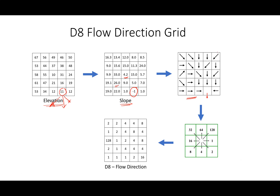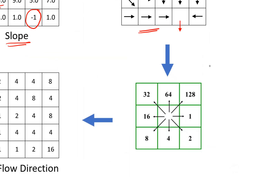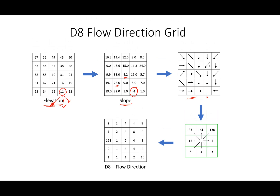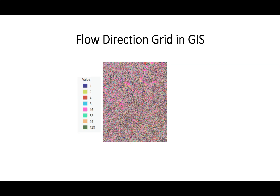Based on the slope values, I have given arrows to all cells except the outlet, which I mark in red. As humans we can see these arrows, but the computer cannot, so we replace them with one of eight values depending on the direction water is flowing. For example, if water flows east, the cell gets a value of 1; if water flows south, the cell gets a value of 4. We replace the arrows with these D8 flow direction values.